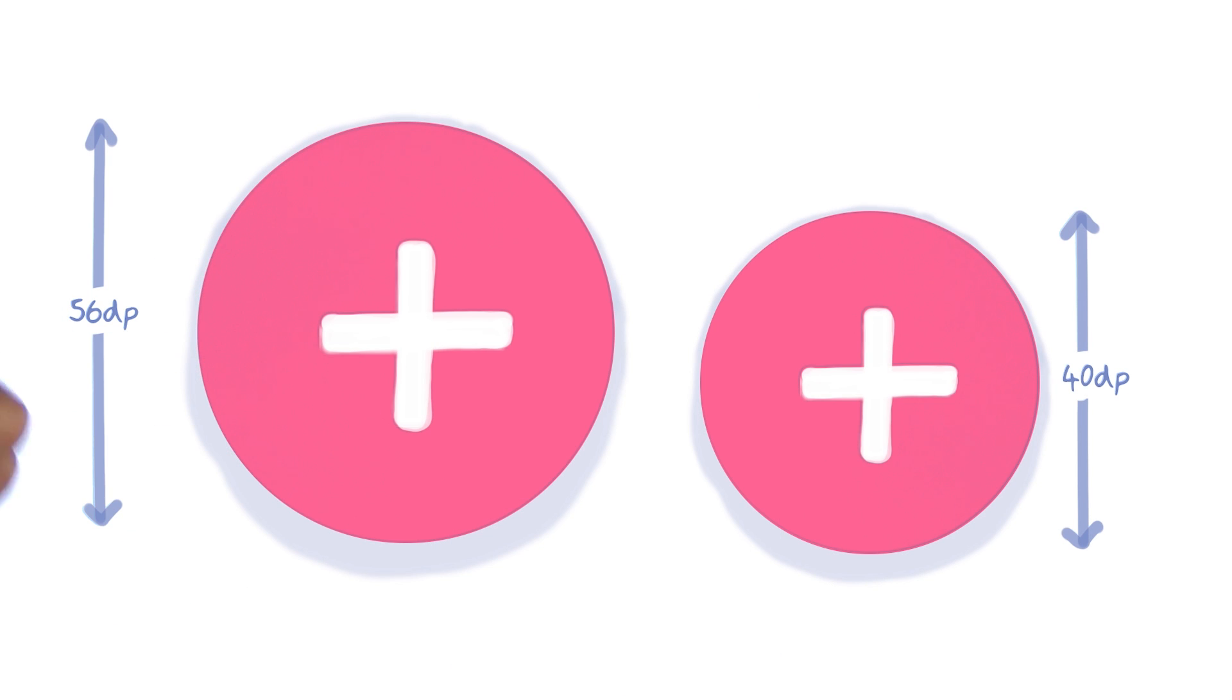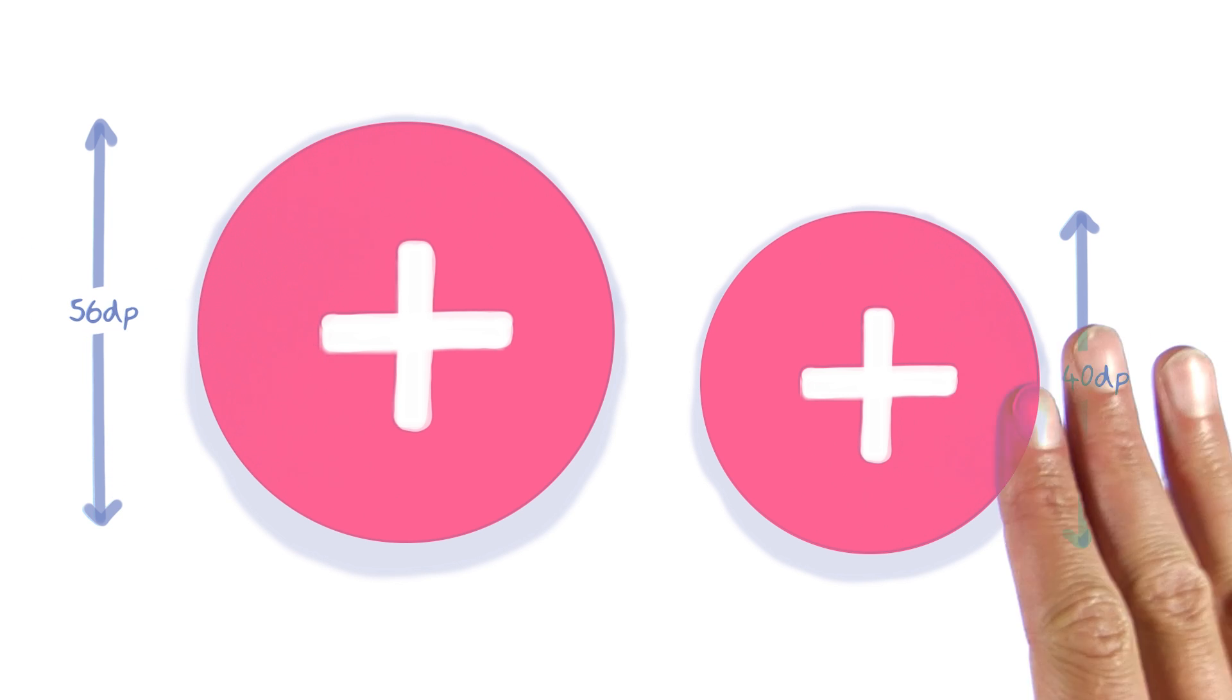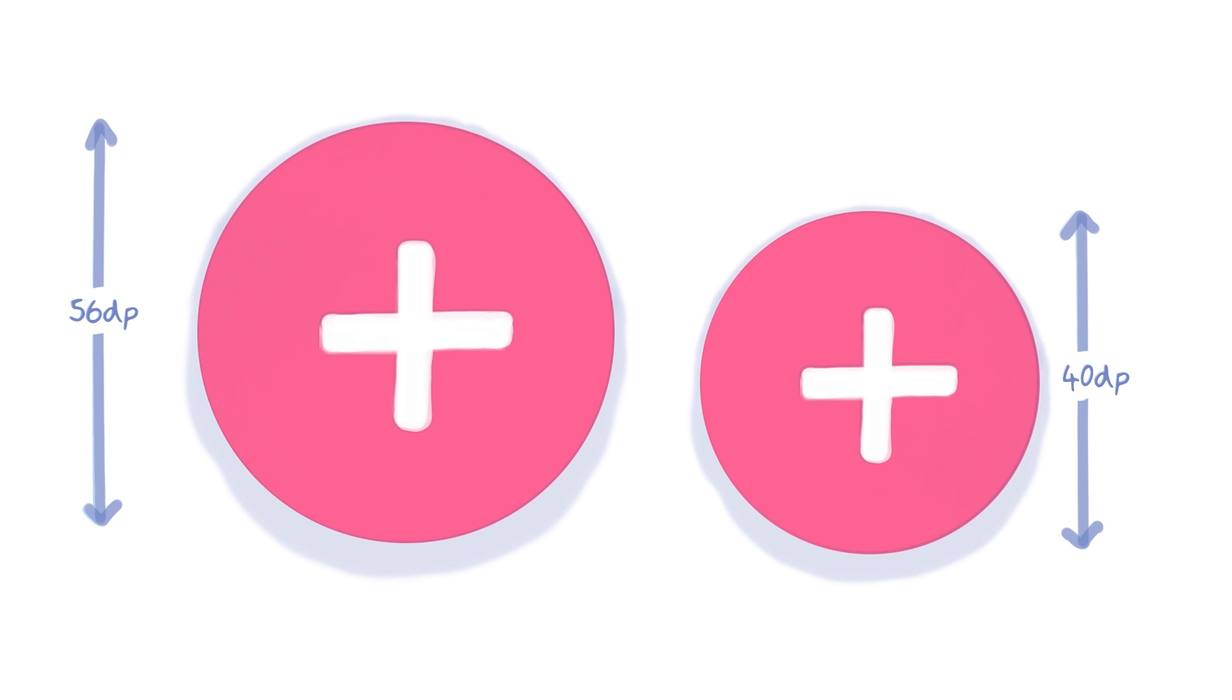FABs have standard sizes and elevations so that they are recognizable across applications. They come in either 40 or 56 dp diameters and generally have a resting elevation of 6 dp, rising to 12 dp when pressed.